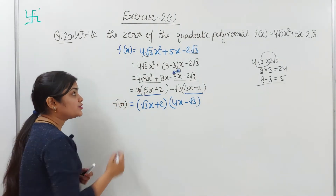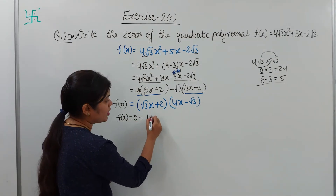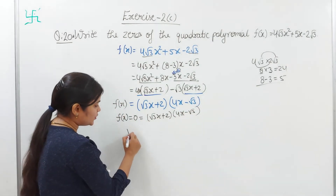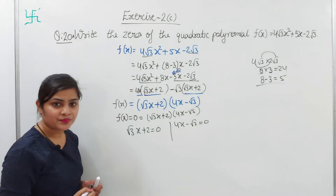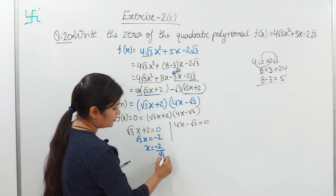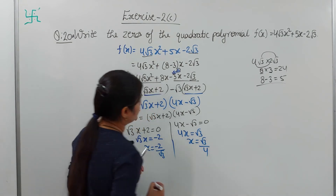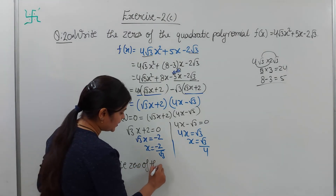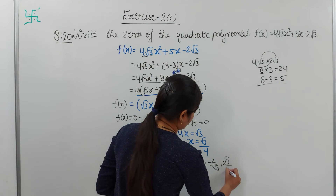This equals fx. For zeros, fx = 0, so (root3·x plus 2)(4x minus root3) = 0. Setting each factor to zero individually: root3·x plus 2 = 0 gives root3·x = minus 2, so x = minus 2/root3. And 4x minus root3 = 0 gives 4x = root3, so x = root3/4. Therefore, zeros of the polynomial are minus 2/root3 and root3/4.